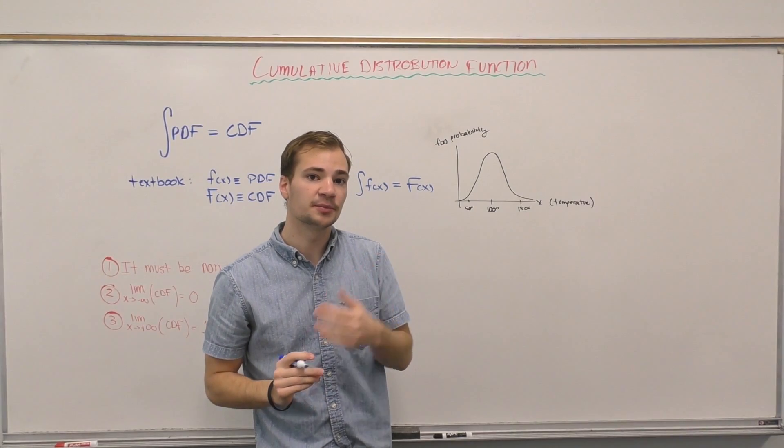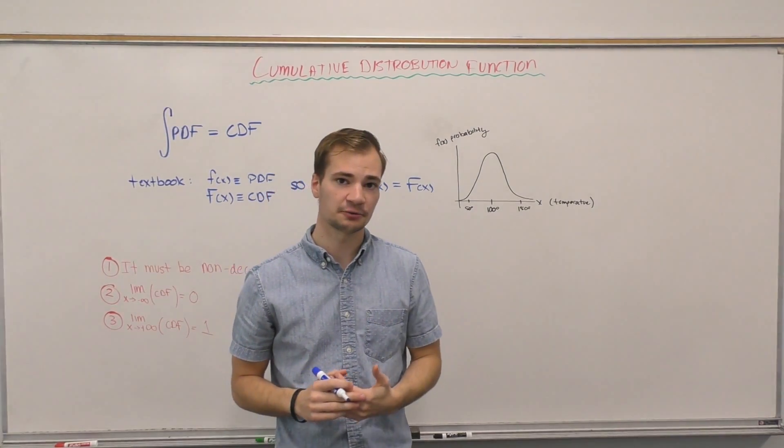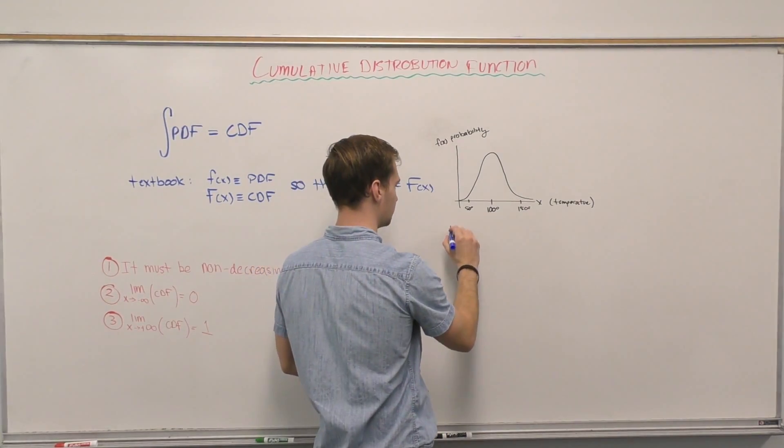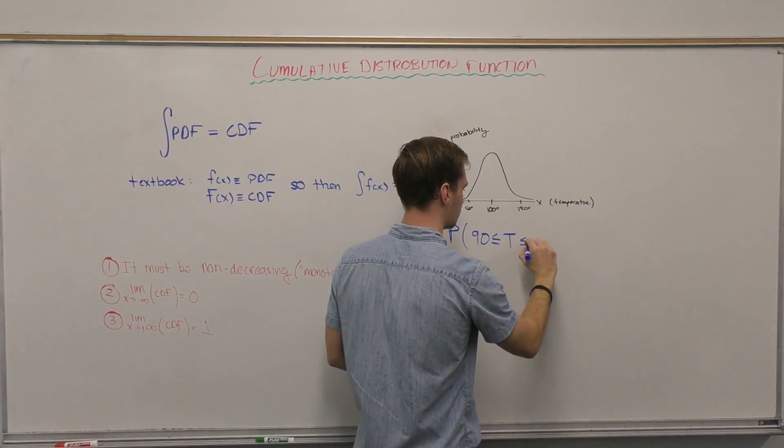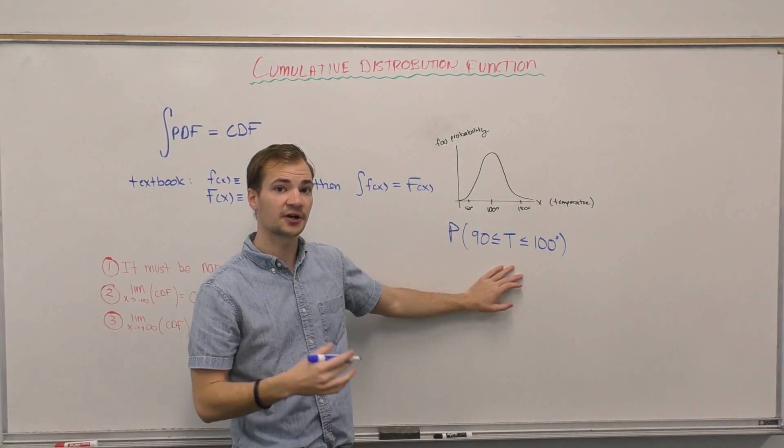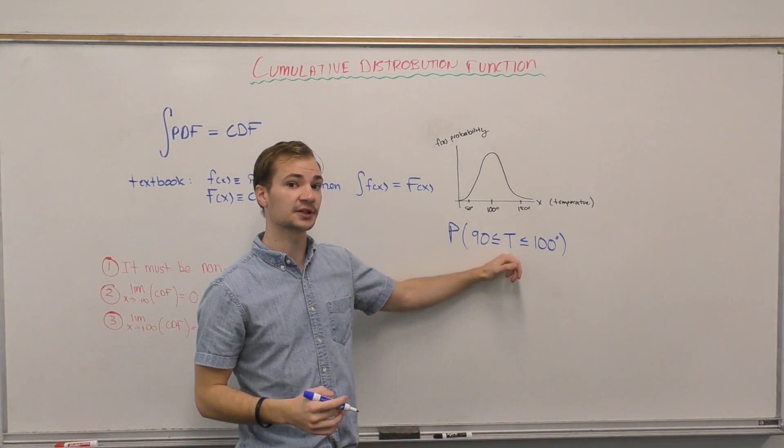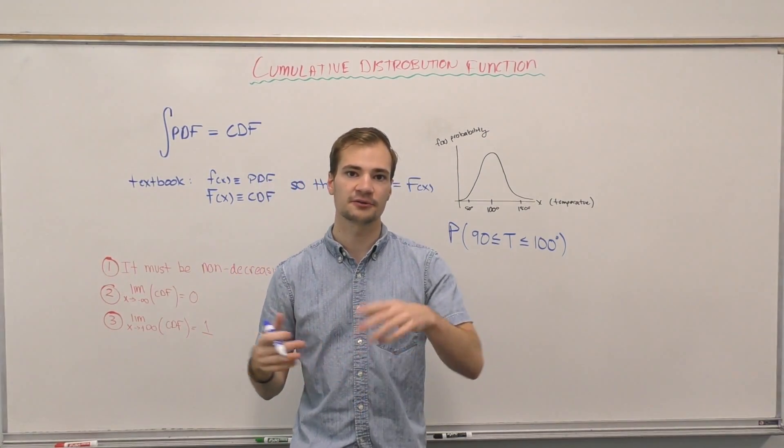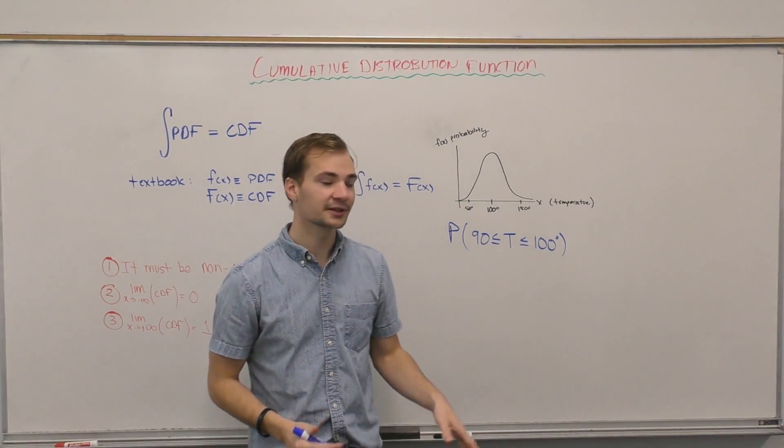Now if I asked you to find the probability that the temperature for a given day would be between 90 and 100 degrees, if we were not using the CDF method, we would have to find the probability of each one of these values occurring. And you might be thinking, oh it's the probability of 90, 91, 92, 93, et cetera occurring.